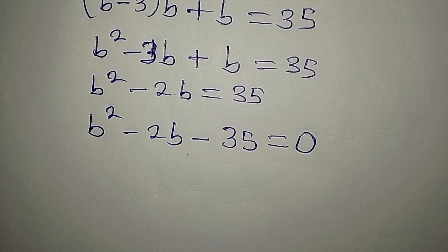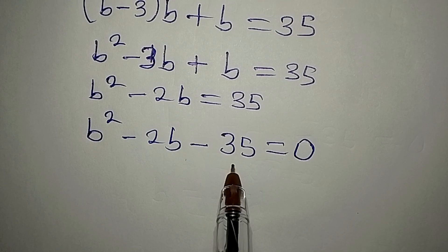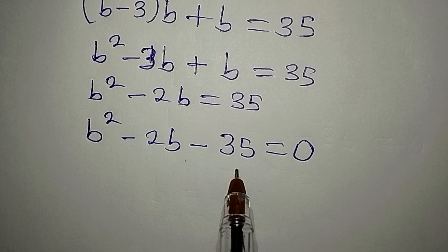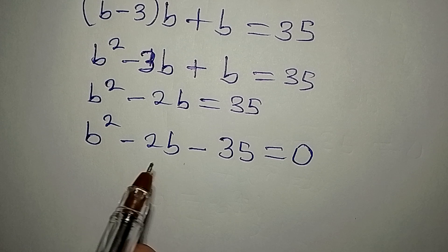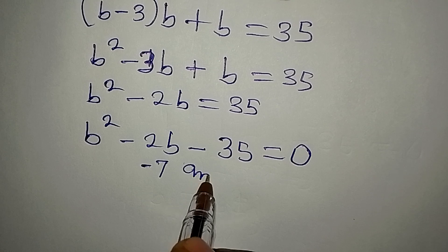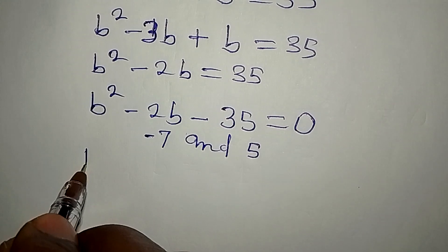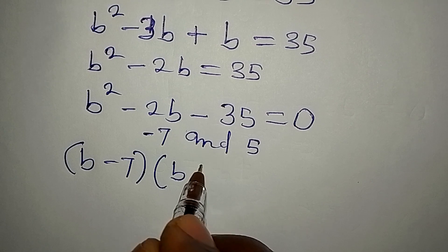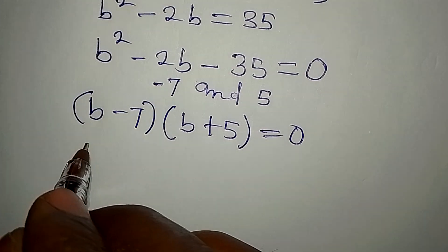Let's factorize. The factors of 35 are 7 and 5. 7 times 5 gives 35, and minus 7 plus 5 gives minus 2. So minus 7 and 5 are the two numbers we'll use. This means the factors are (B minus 7) and (B plus 5), giving us (B minus 7)(B plus 5) equals zero.